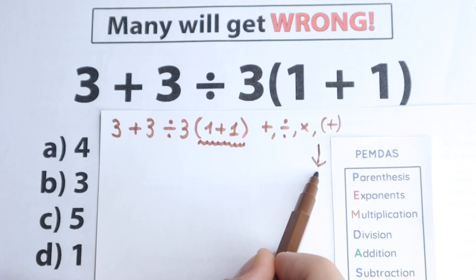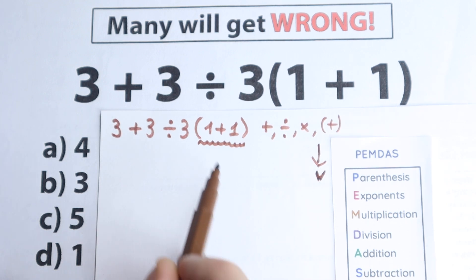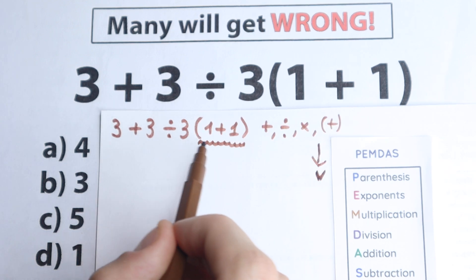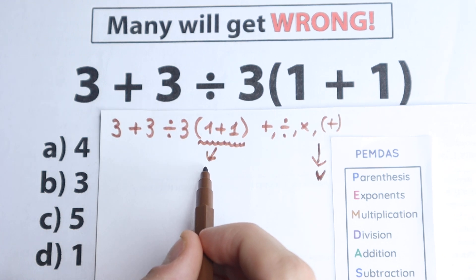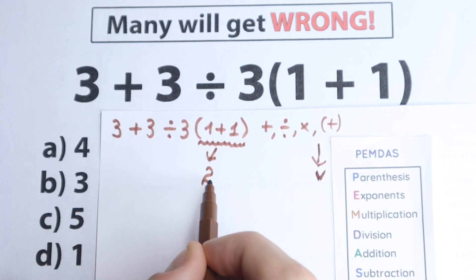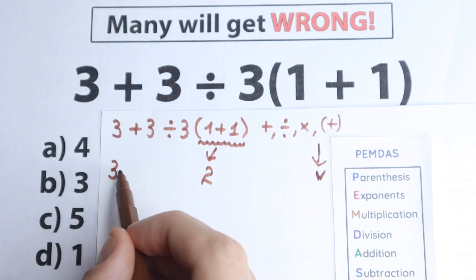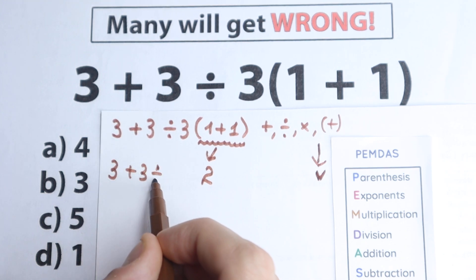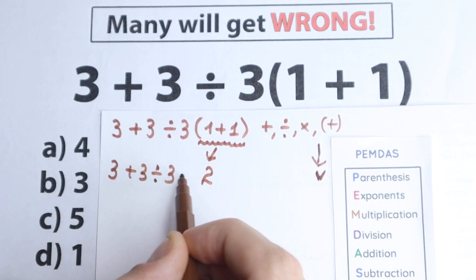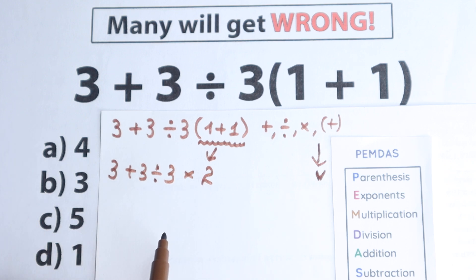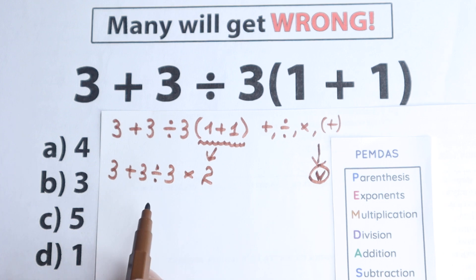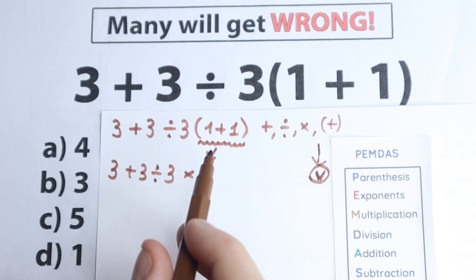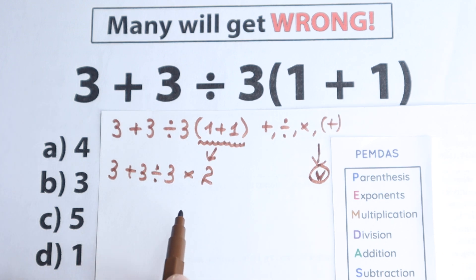As I said before, right here we have parentheses — yeah, we have this parentheses — so we need to start with the parentheses first. So 1 plus 1 equals 2, and we now have 3 plus 3 divided by 3, times 2. We solved the expression in parentheses and let's go to the next step.